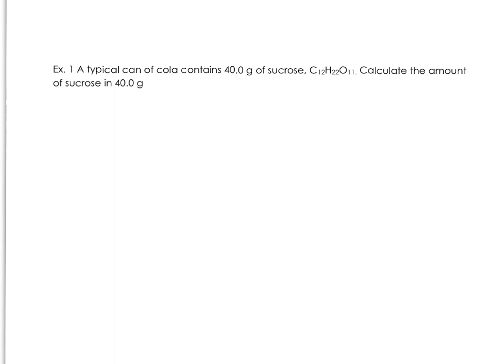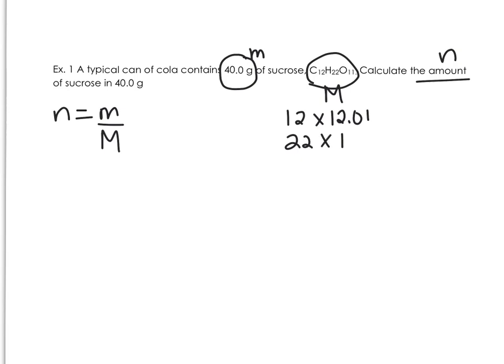First example: A typical can of cola contains 40 grams of sucrose. Calculate the amount of sucrose in 40 grams. Always do this, always identify what you've got. So mass, here's molar mass. You've got the chemical formula for a substance, so you can find the molar mass. And it wants to calculate the amount, so we're looking for moles. Moles is mass divided by molar mass.